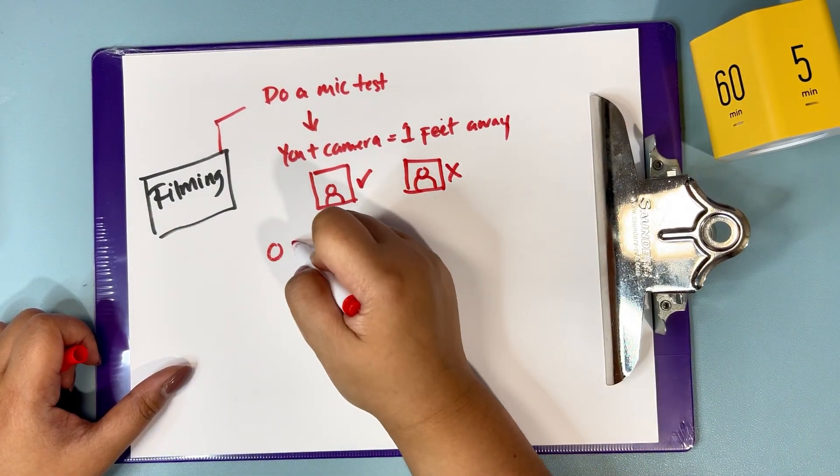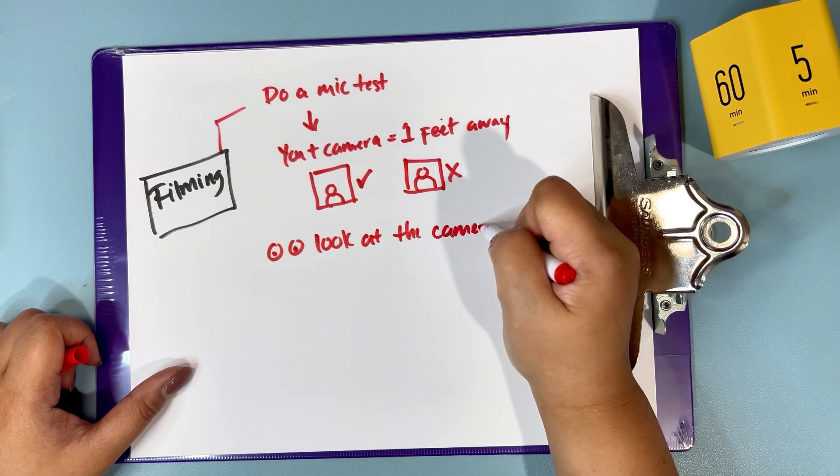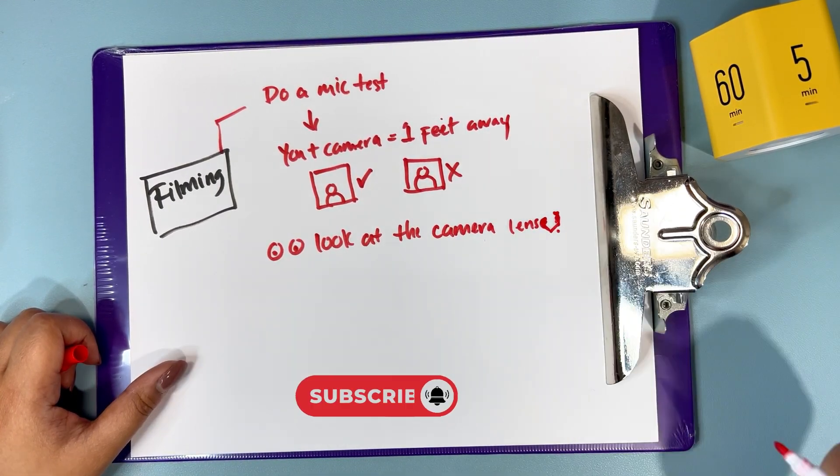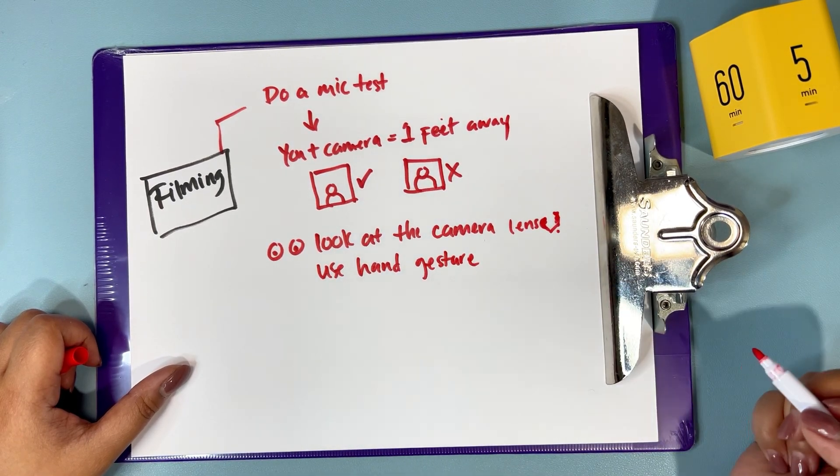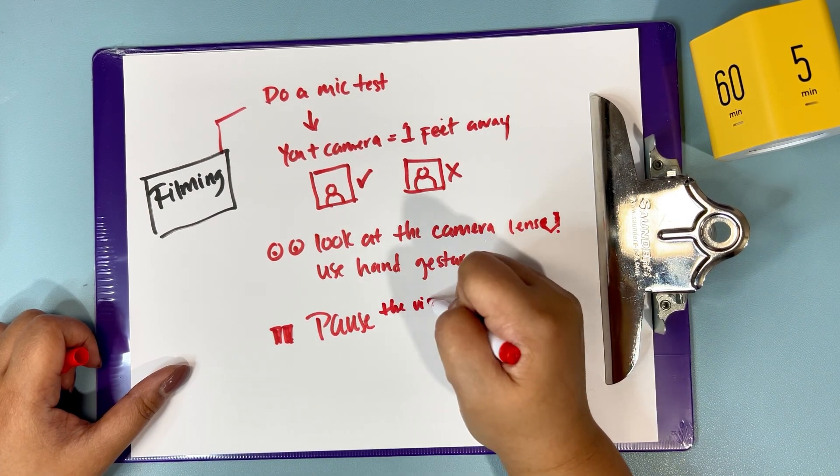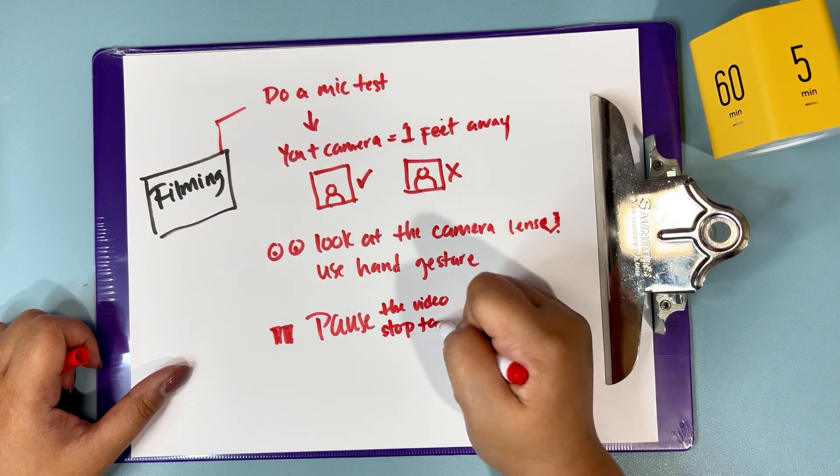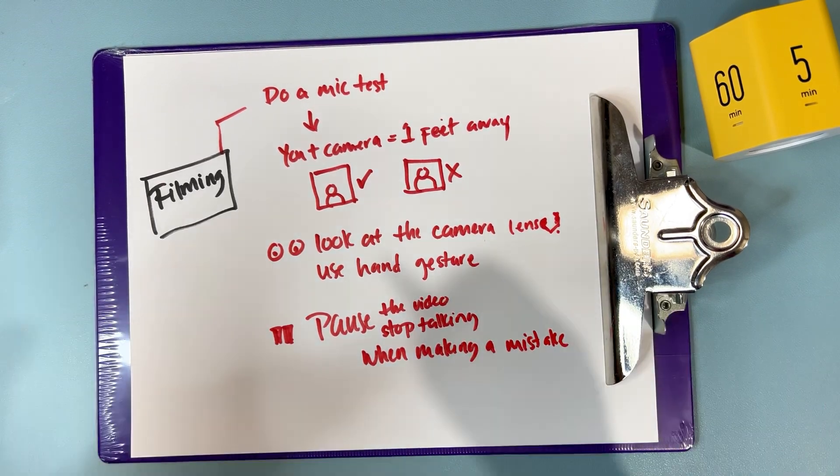When filming, try to look at the camera lens as much as possible. It might feel strange actually talking to a camera, but imagine there's someone behind it, like you're on FaceTime call with a friend or a family member. Feel free to use hand gestures if that's natural for you. If you make a mistake, don't worry. Just pause for a moment and then continue. This will make it easier to edit out the mistakes later on.